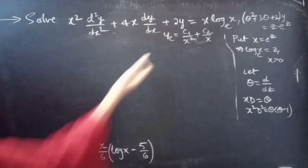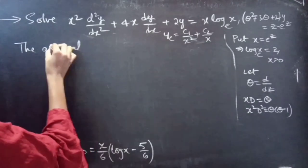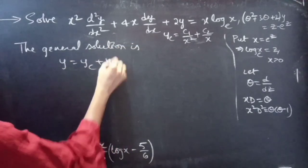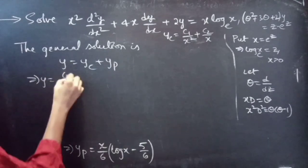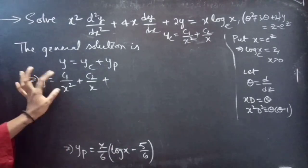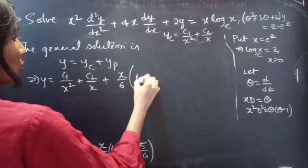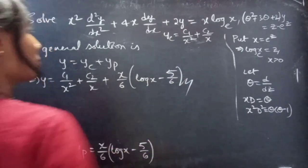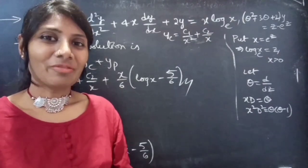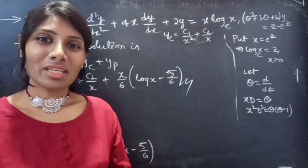We have both yc and yp. The general solution is y = yc + yp: y = c₁/x² + c₂/x + (x/6)(log x − 5/6). This completes the problem. We have seen a problem from higher order linear differential equations with variable coefficients. Hope you understand. See you in the next video. Bye bye.